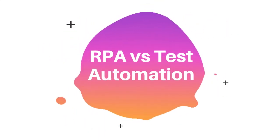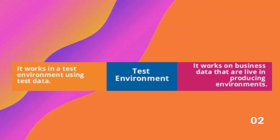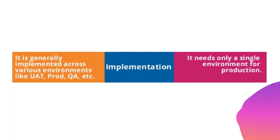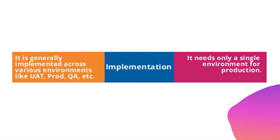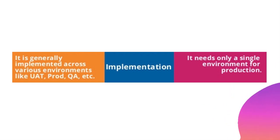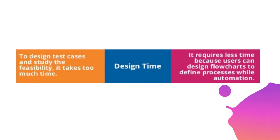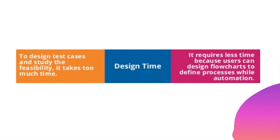Let's move to the comparison. Test Automation works in a test environment using test data, while RPA works on live business data in production environments. Test Automation is generally implemented across various environments like UAT, PROD, QA, etc., whereas RPA needs only a single environment for production. To design test cases and study feasibility, it takes too much time. RPA requires less time because users can design flowcharts to define processes during automation.